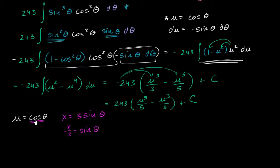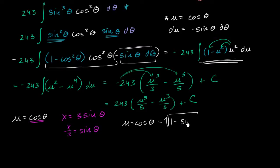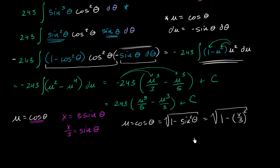I'll show you two techniques for doing this. The first is to use the most fundamental trigonometric identity: cosine theta equals the square root of 1 minus sine squared theta. Since sine theta equals x over 3, this becomes the square root of 1 minus (x over 3) squared. So this is u in terms of x — everywhere we see a u, we can replace it with this expression, and we've written everything in terms of x.